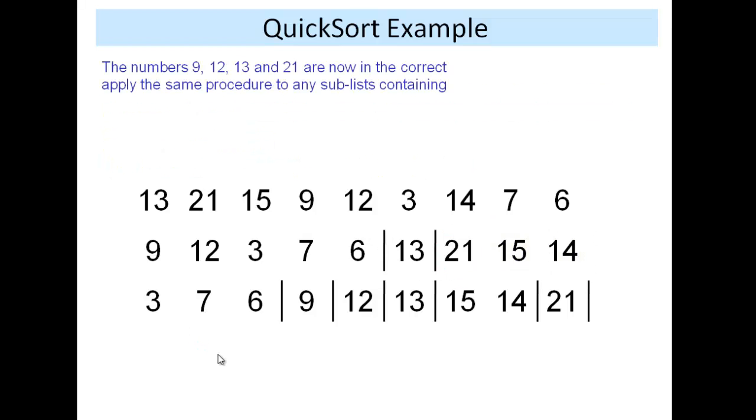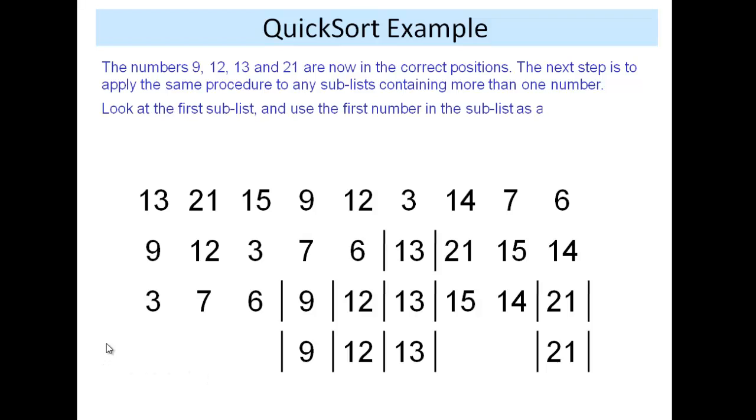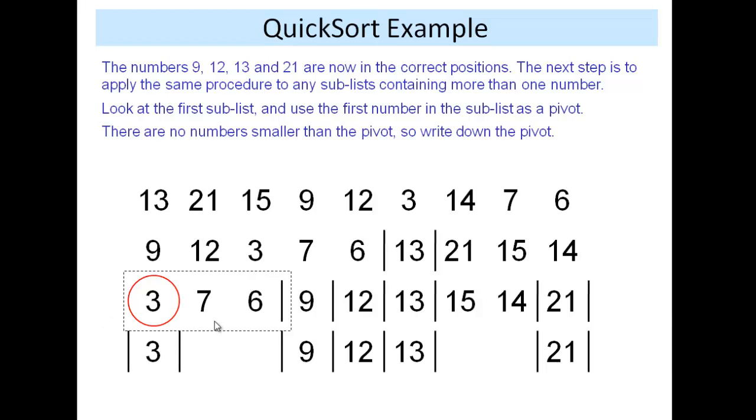the pivot will be 3. There's no numbers smaller than or equal to, so we place the 3 first. And then we write down the numbers larger than the 7 and the 6.